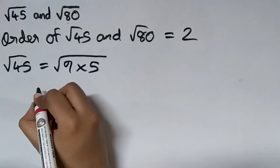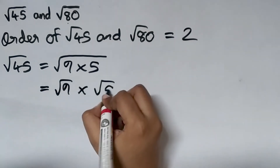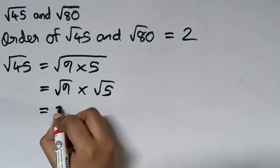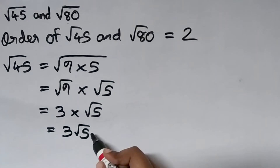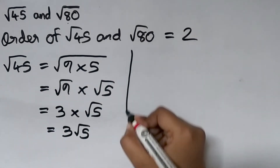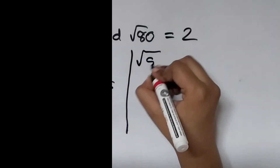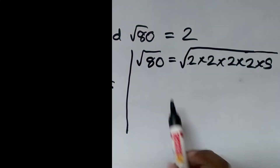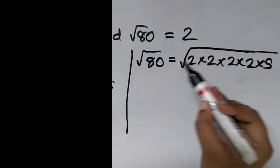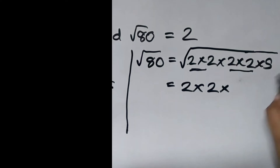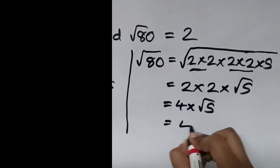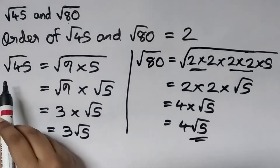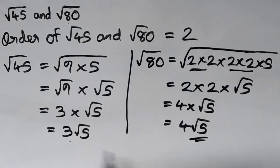We will simplify root 45 first. Root 45 can be written as root of 9 into 5, which equals root 9 into root 5. Square root of 9 is 3, so this equals 3 root 5. Now for root 80: square root of 80 can be written as root of 16 into 5, which equals 4 root 5. So the simplest form of root 45 is 3 root 5 and the simplest form of root 80 is 4 root 5.